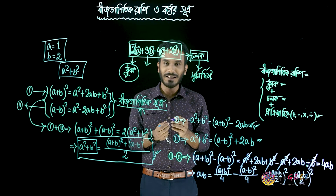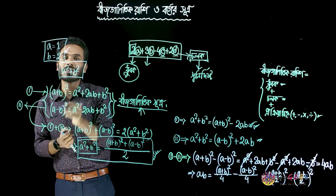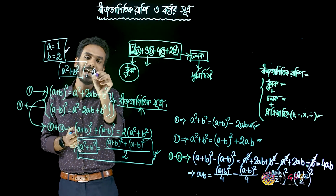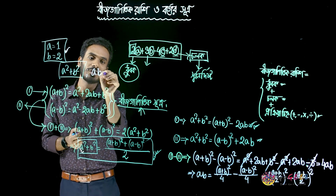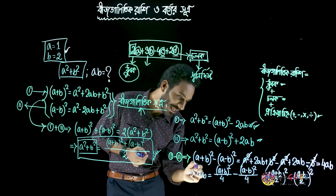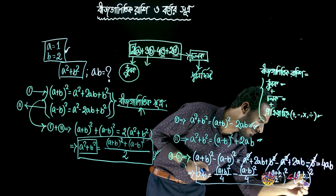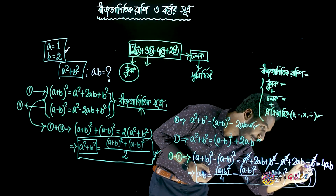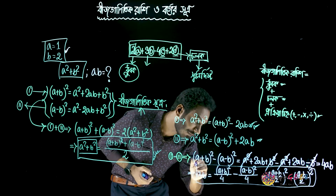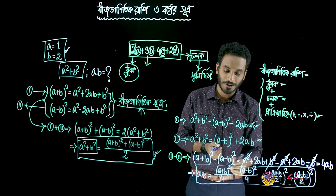And so, if we have a given a or b given a, then we will say that a plus b by 2, whole square, minus a minus b by 2, whole square.